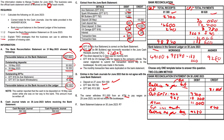The balance per bank account is R9,280 and this must balance. Your CRJ and CPJ don't have to balance, but your bank recon definitely has to. The total here is R43,280.